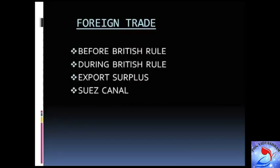Export surplus refers to the excess of exports over imports. Export surplus during British rule proved disadvantageous to India for the following reasons: commodities were not available to Indians as they were being exported, and ignoring domestic needs, goods were exported for the benefit of Britain. This export surplus was used to fulfill administrative and war expenses of Britain and to finance deficit invisible items like tourism, transport, and insurance. This was called the drain of Indian wealth, and this export surplus did not lead to any flow of gold and silver into the country.